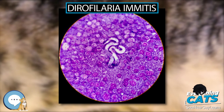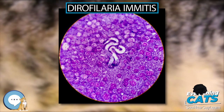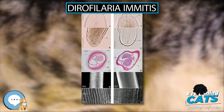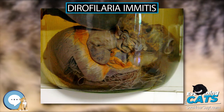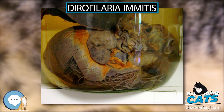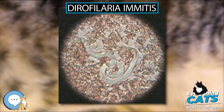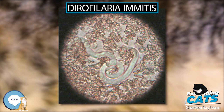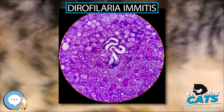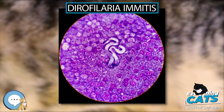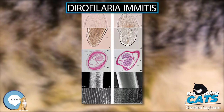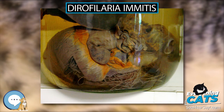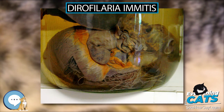The injectable form of moxidectin was taken off the market in the United States due to safety concerns in 2004, but the FDA returned a newly formulated ProHeart 6 to the market in 2008. ProHeart 6 remains on the market in many other countries, including Canada and Japan. Its sister product, ProHeart 12, is used extensively in Australia and Asia as a 12-month injectable preventive, and was approved for use in the United States by the FDA in July 2019.